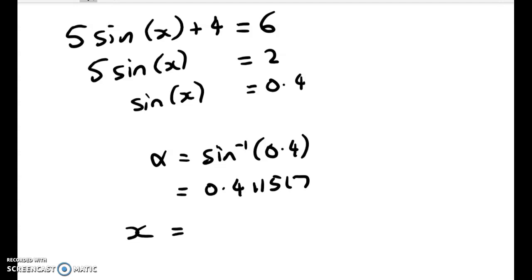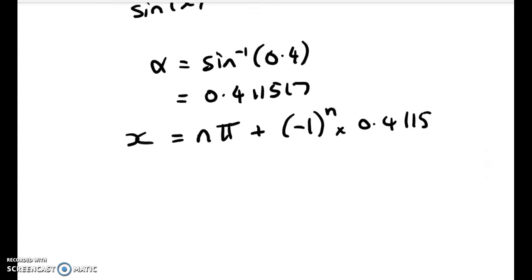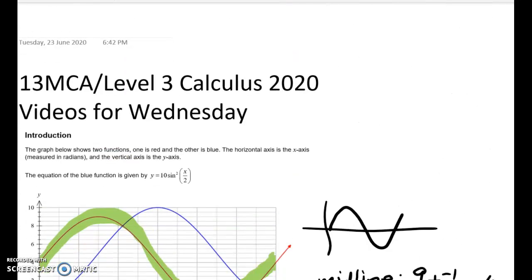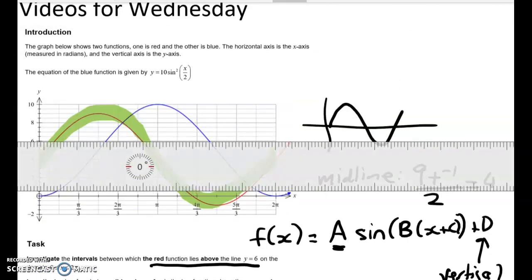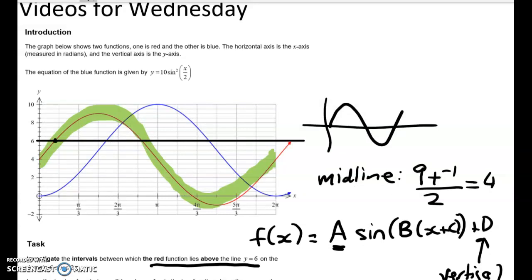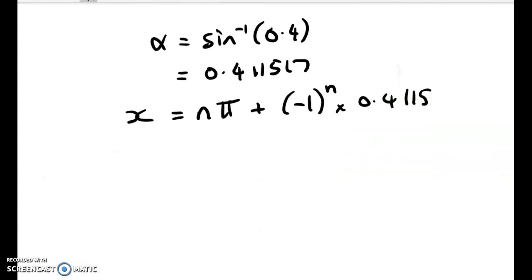So alpha is the angle whose sine is 0.4. That's going to give me the principal value, and that works out to be 0.411517. So x, using my general solution for sine formula, is equal to n pi plus negative 1 to the power of n times 0.4115. Let's substitute in some values to see what these two are up here on the graph. So I'm looking for this point here and this point here. So to get those, I'm going to substitute in some values of n and generate some particular solutions.